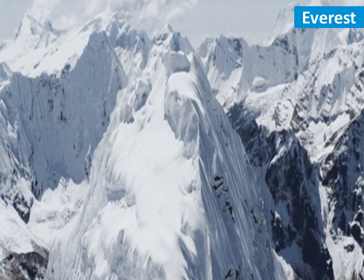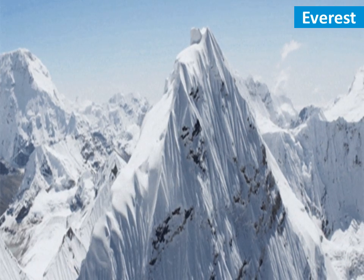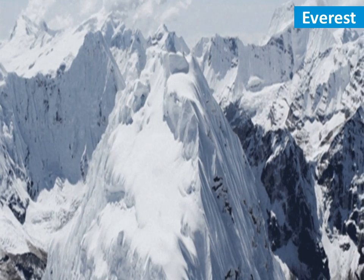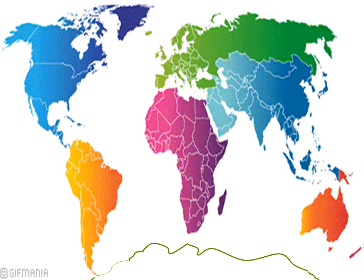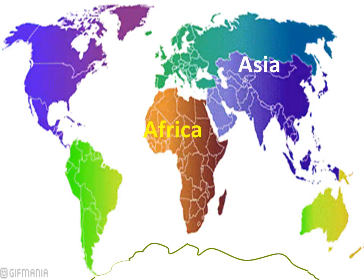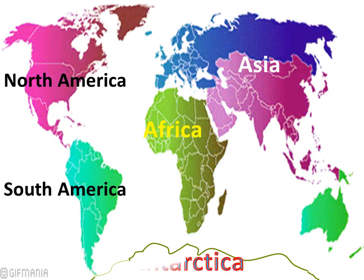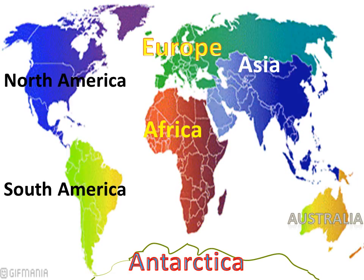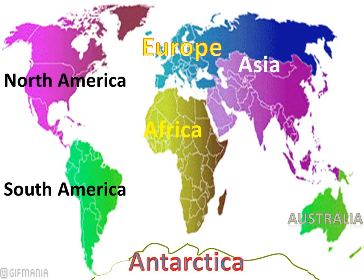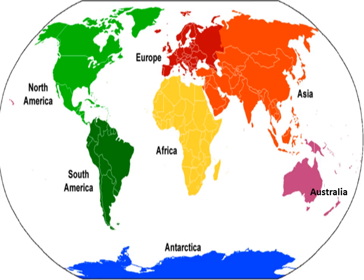The lithosphere has seven large landmasses called continents. The seven continents are Asia, Africa, North America, South America, Antarctica, Europe and Australia. Asia is the largest and most populated continent.